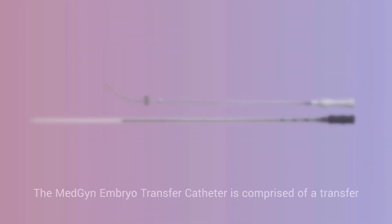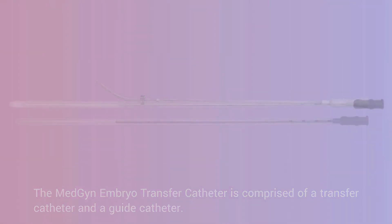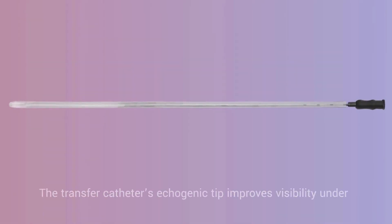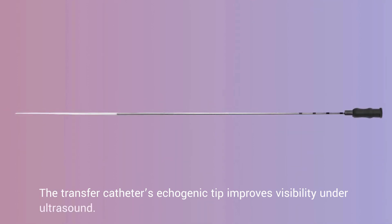The MedGuy embryo transfer catheter is comprised of a transfer catheter and a guide catheter. The transfer catheter's echogenic tip improves visibility under ultrasound.